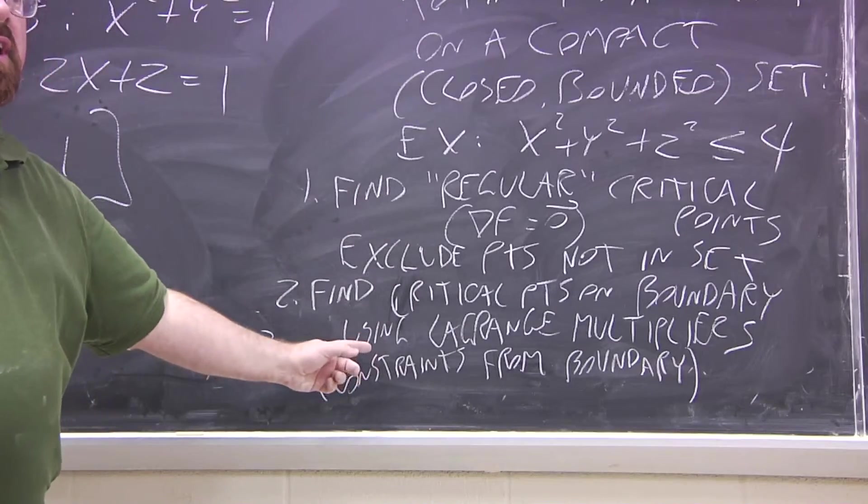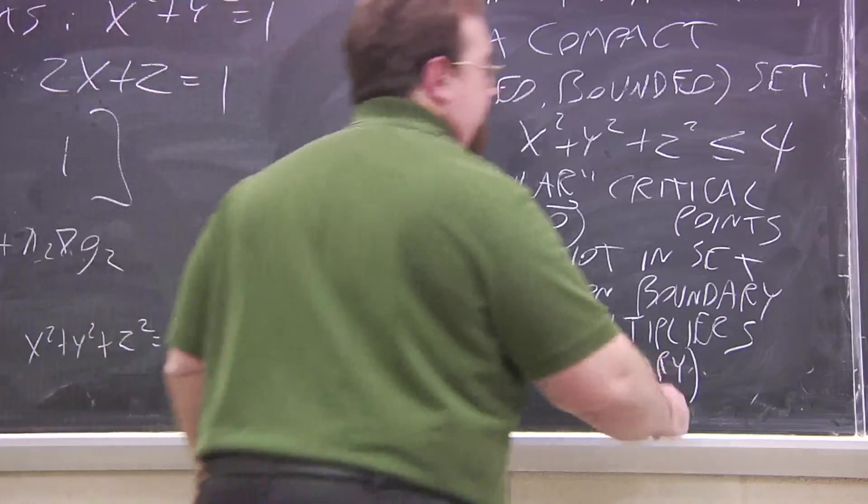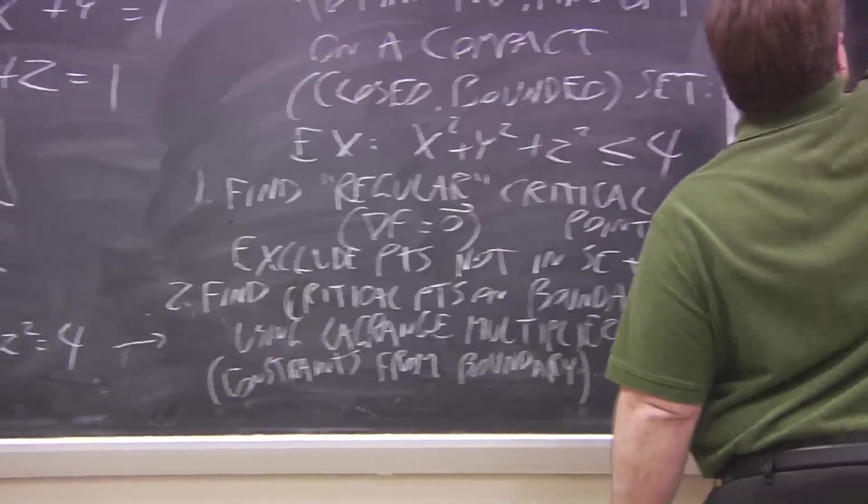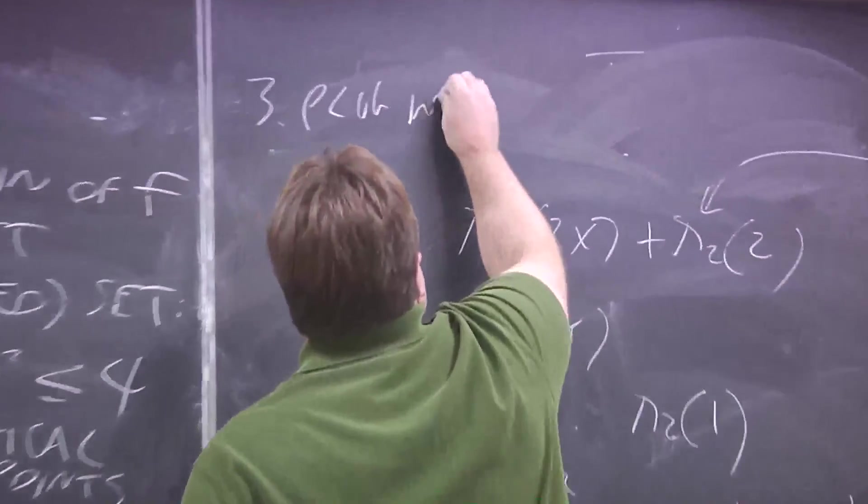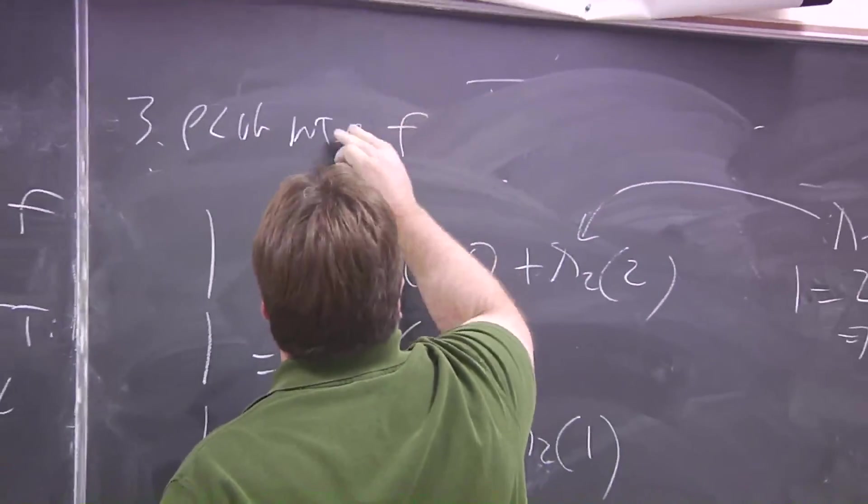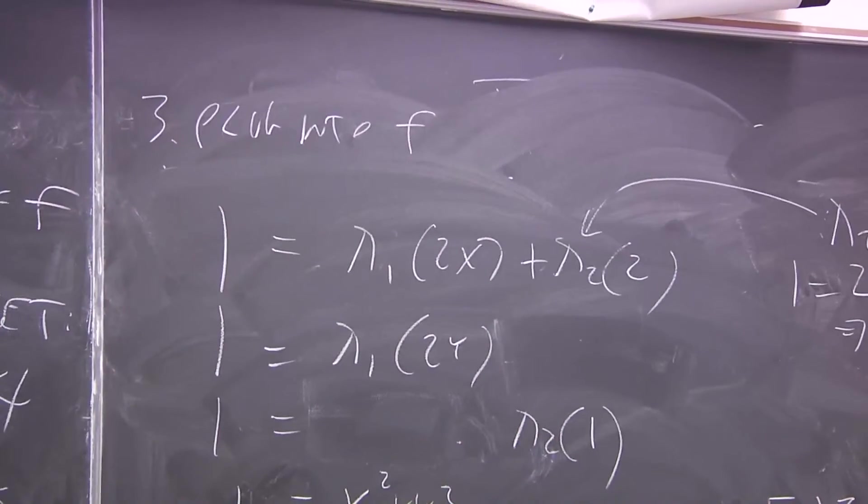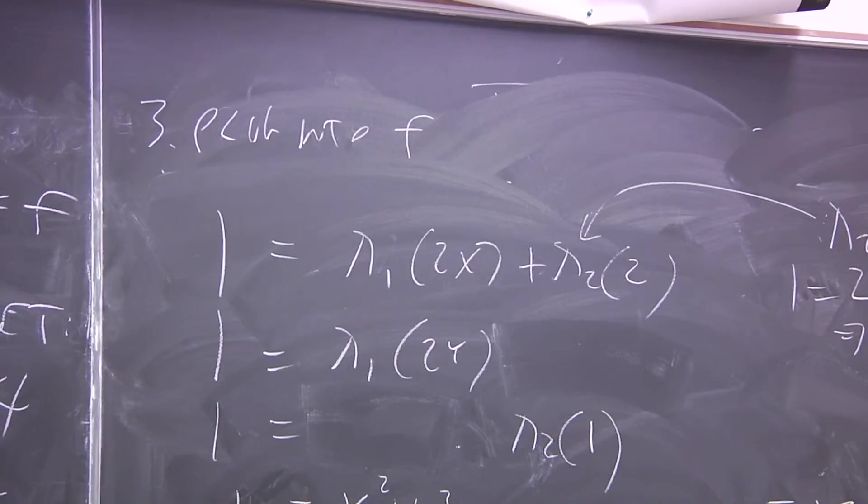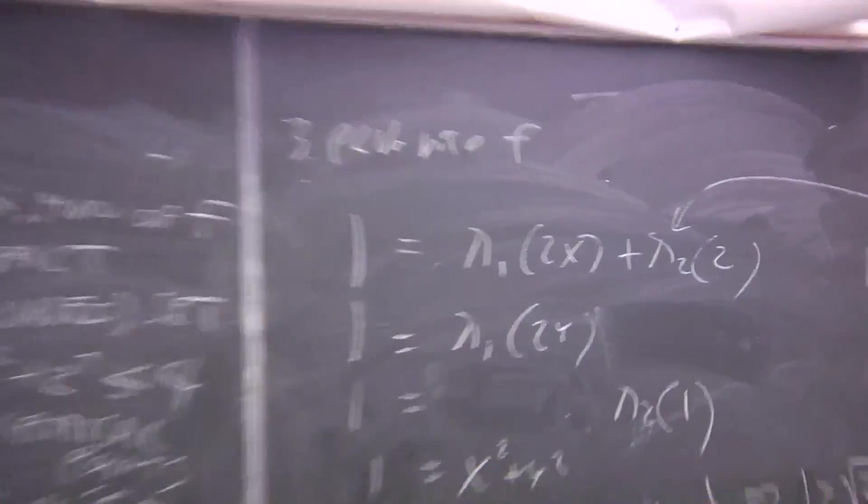You find all of them. And then step 3: take all the critical points you find in steps 1 and 2, plug them into F. Largest one is your max, smallest one is your min.